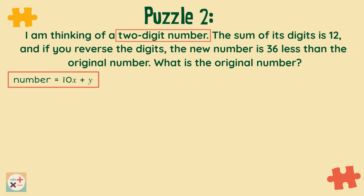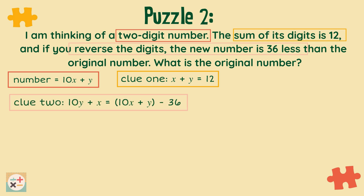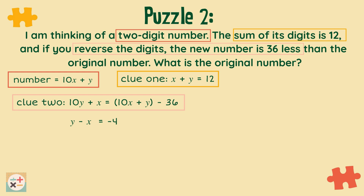We can express the number as 10x plus y. We can also state the sum of the digits as x plus y equals 12. We know that when we reverse the digits it equals 36 less than the original number, so we can write it out like this. Notice we now have 10y plus x as we've reversed the digits. We can simplify this to y minus x equals minus 4.